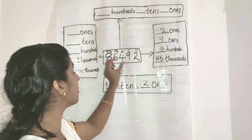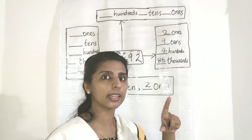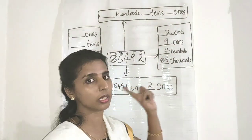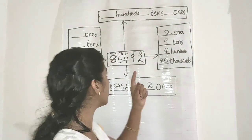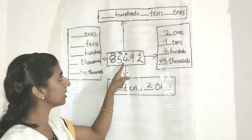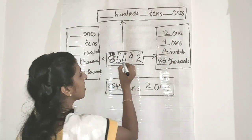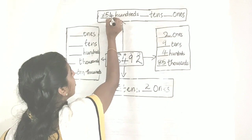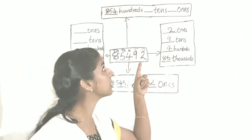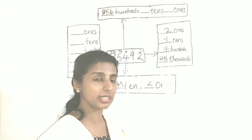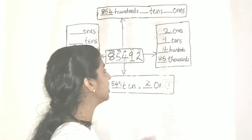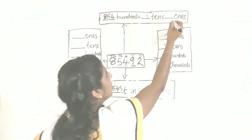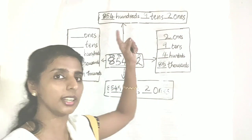Moving to the next form, we start with hundreds place. How many hundreds are there? Hundreds place is here — the number reading up to this is 854. So 854 hundreds are there. Then next we want tens: under the tens place we have digit 9 only, so nine tens. Then the last one is two ones. This is the next form of this number.